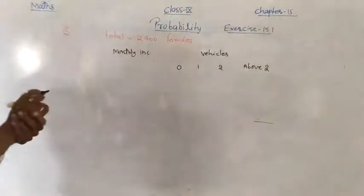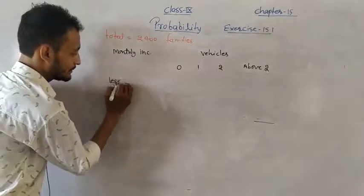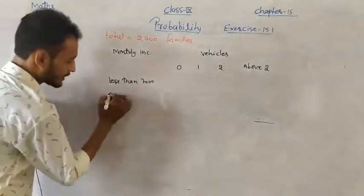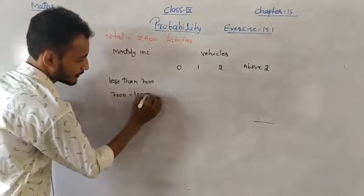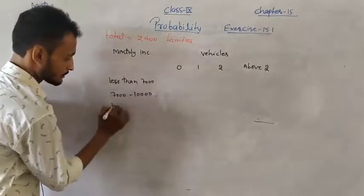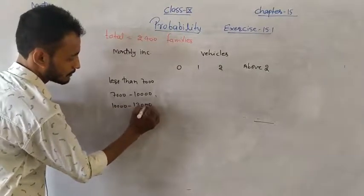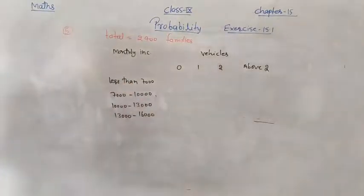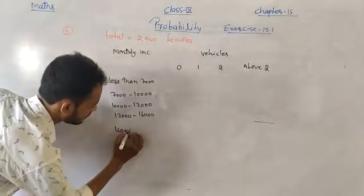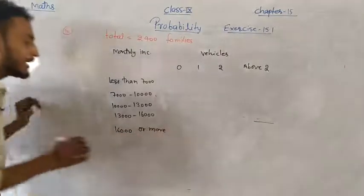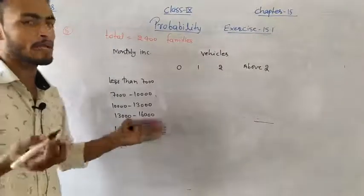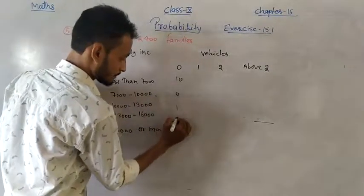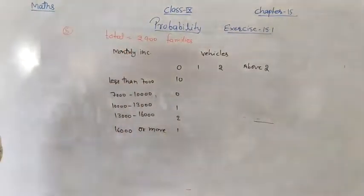Income categories in the table are: less than 7000, 7000–10000, 10000–13000, 13000–16000, and 16000 and more. The data for all categories is provided in the table.